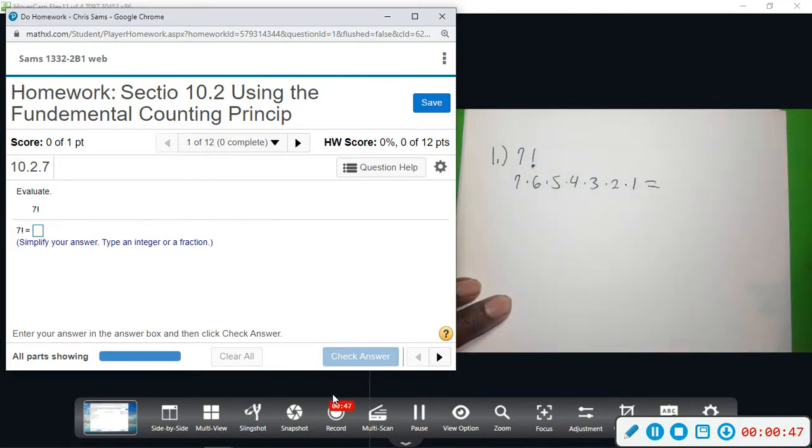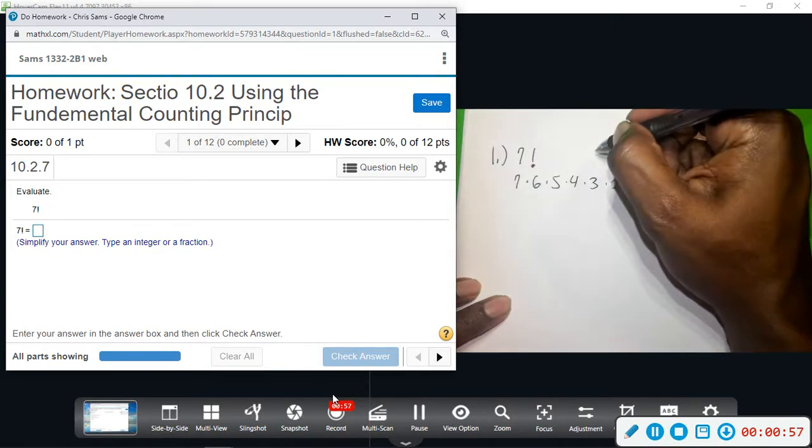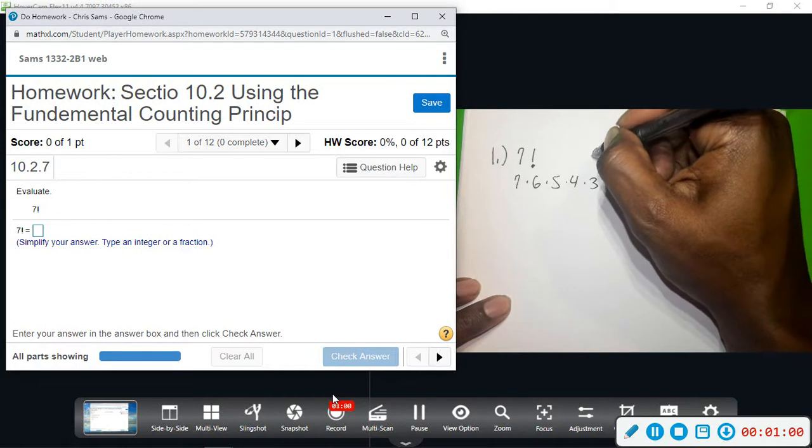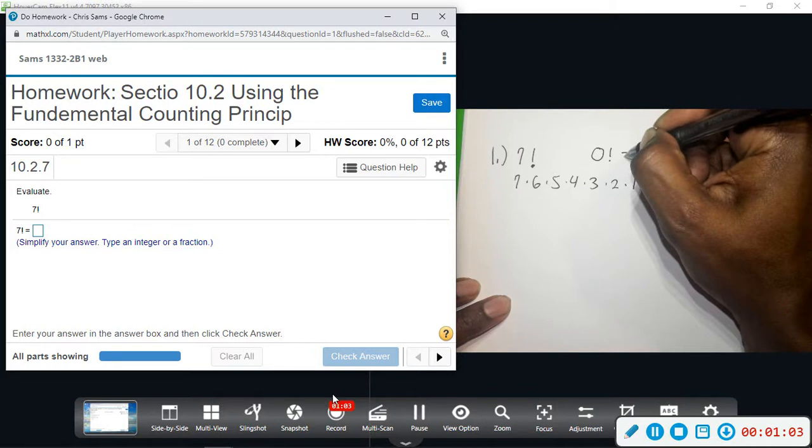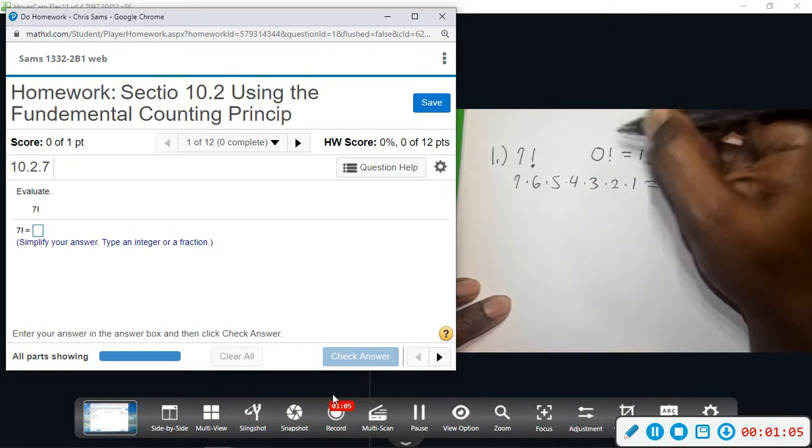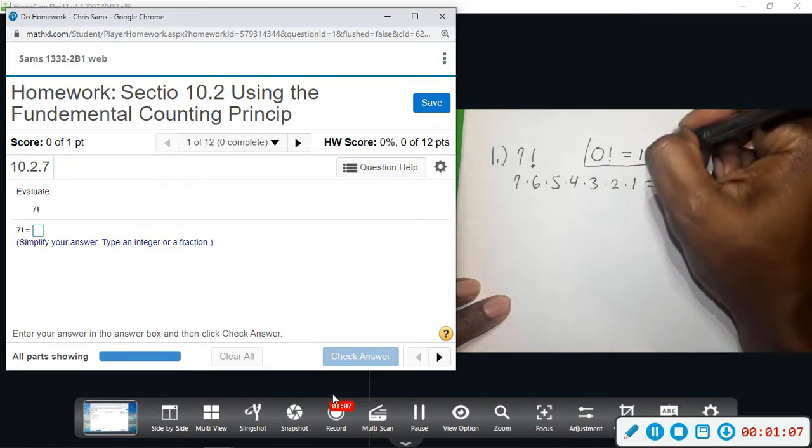While I'm here, there is a special rule or fact that you need to know: zero factorial by definition is equal to one. So this is just something that you need to note. Make a note of this: zero factorial is equal to one by definition.